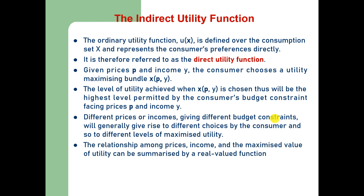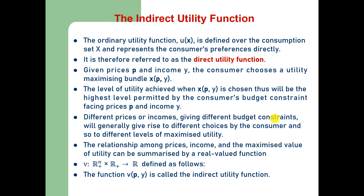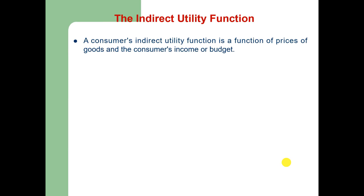Different prices and incomes giving different budget constraints will generally give rise to different choices and so to different levels of maximized utility. The relationship among prices, income, and the maximized value of utility can be summarized by a real-valued function. The indirect utility function V, defined on non-negative R, is a real-valued function. Because the function V depends on the prices vector and income, it is called the indirect utility function. We maximize utility over X in the non-negative orthant subject to the budget constraint.